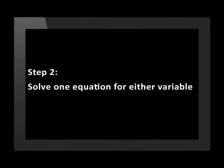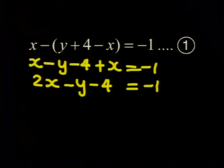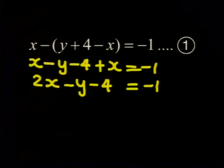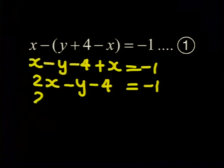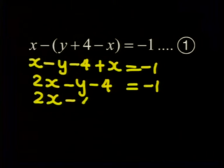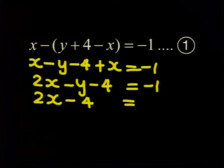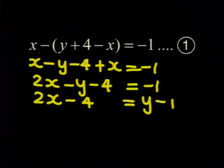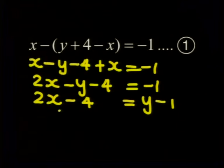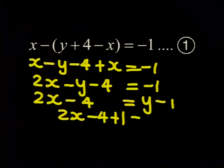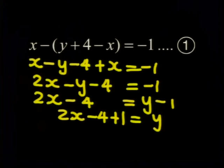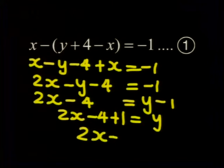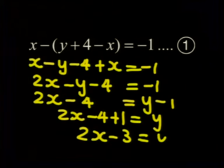Now it makes sense for us to get one of the variables onto one side. And I'm going to write it in terms of y. So I'm going to add y to both sides and I get 2x minus 4 equals y minus 1. I'm now going to add positive 1 to both sides and I get 2x minus 4 plus 1 equals y. And this simplifies to 2x minus 3 equals y.